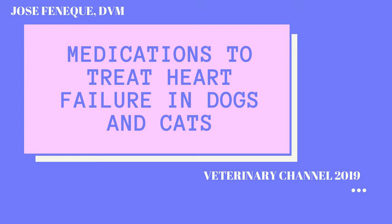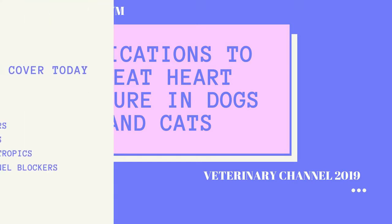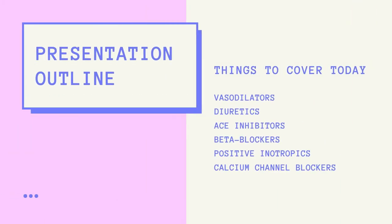This information is not meant to be a substitute for veterinary care. The medications discussed in today's video can be divided into six groups of veterinary drugs. These groups are vasodilators, diuretics, ACE inhibitors, beta blockers, positive inotropes, and calcium channel blockers.